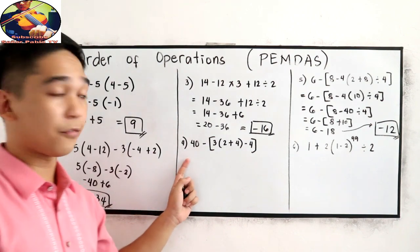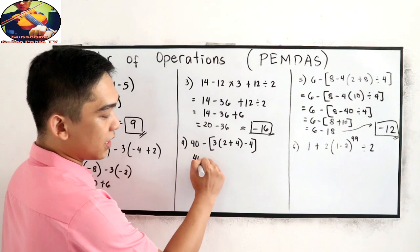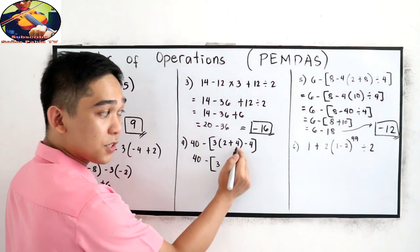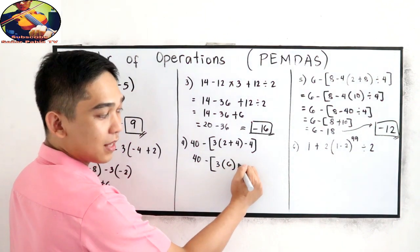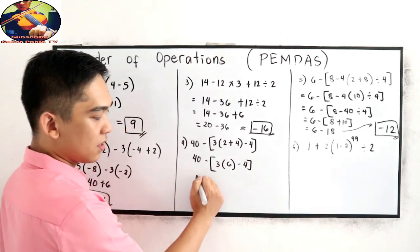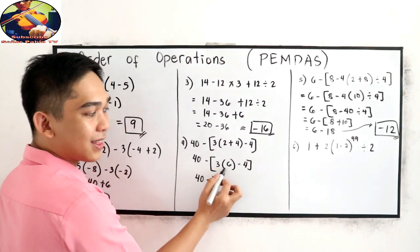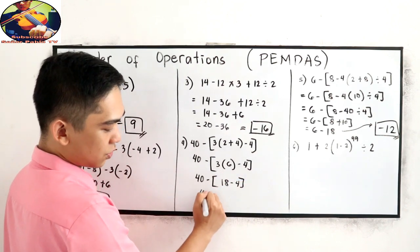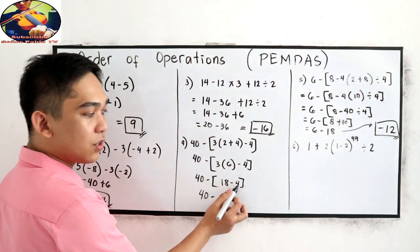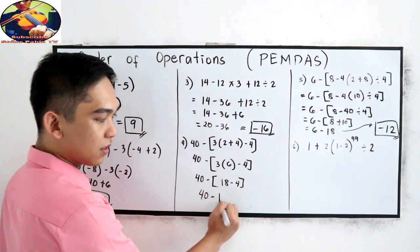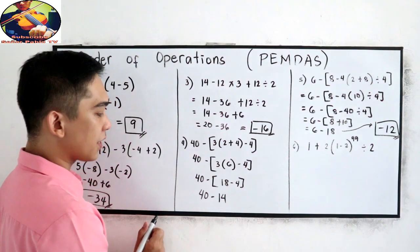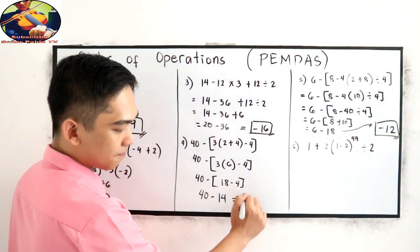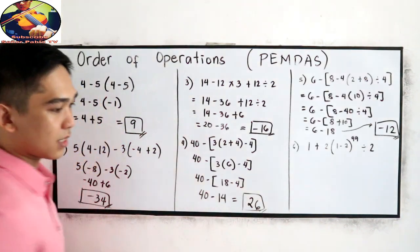Number 4: 40 minus, inside the parentheses 2 plus 4 is 6, then copy minus 4. Copy 40 minus 3 times 6, that is 18, minus 4. So 40 minus 18 minus 4 is 14. For the final answer: 40 minus 14 is 26. Positive 26 is our final answer.